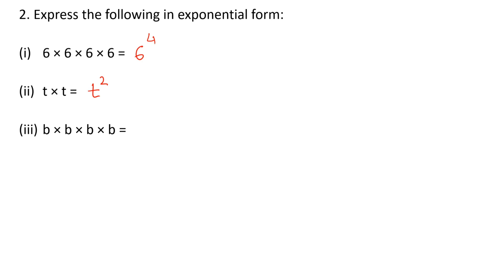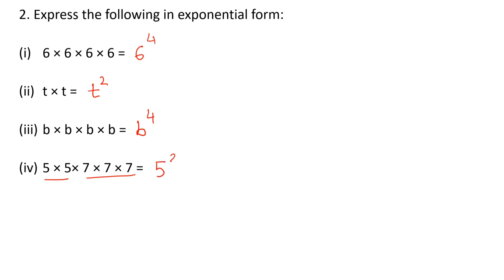B, the letter B, is multiplied 4 times, so B raised to the power of 4. Here we see 5 and 7 — two different numbers are given. Since we need to write it in exponential form: 5 is multiplied 2 times, so 5 raised to the power of 2; multiplied by 7, which appears 3 times, so 7 raised to the power of 3.